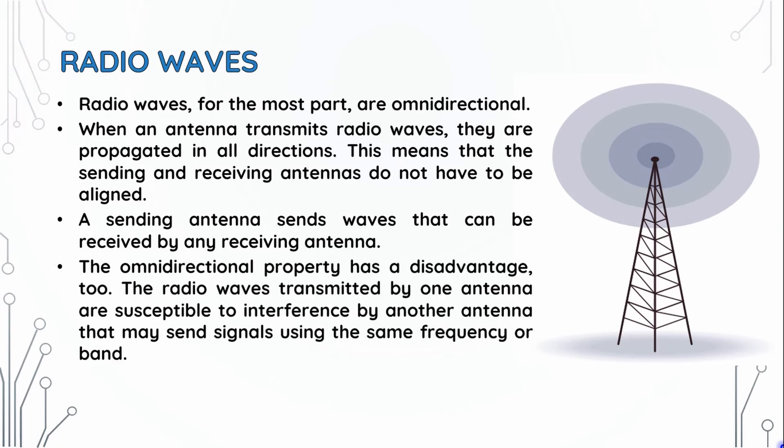The omnidirectional property is a common disadvantage because it leads to signal interference. When another antenna operates on the same frequency as the transmitted signal, the signals overlap and cause interference.